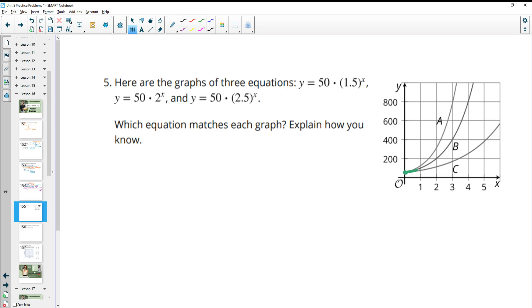So then we see A here. A is on top, meaning it's increasing the fastest. This means that it's going to have the highest growth factor, so the highest number kind of inside these parentheses attached to the variable. So that's going to be this one. So this one is graph A.